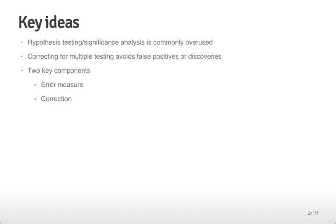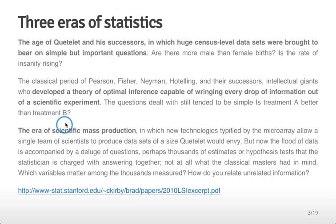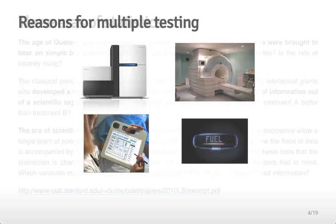There are two key components to multiple testing corrections. First, a definition of an error measure that you would like to control, and then a definition of a correction or statistical method used to control that error measure. This is related to the three eras of statistics from a book by Brad Efron, a professor of statistics at Stanford. The first era involved huge census-level data sets brought to bear on simple but important questions. The classical period developed a theory of optimal inference for extracting as much information as possible from small sample sizes, back when data was expensive to collect. The third era — the era we're in now — is the era of scientific mass production when data is cheap and easy to collect. But this means we're performing more and more analyses, and if we don't correct for the fact that all these analyses are performed, and we allow for a small amount of error in each, those errors can pile up.